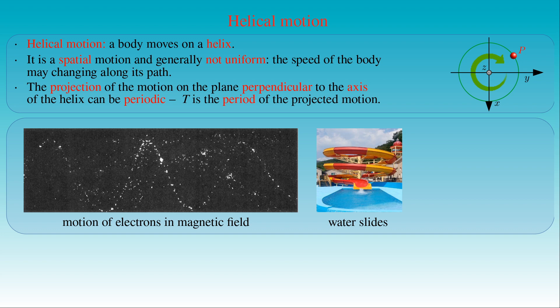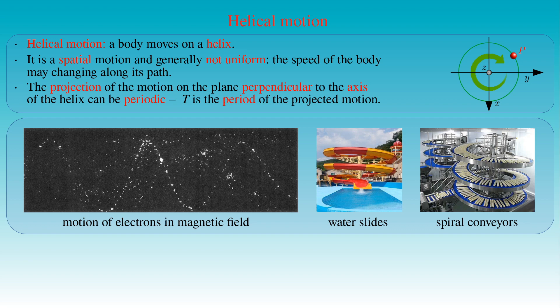We can also find examples for helical motion in industrial technologies. Spiral conveyors transfer loads from one level to another. They are made of modular belt twisted around a drum in the center. The belt slides on rails with low friction, which are fixed on external vertical support columns. If the diameter of the drum is constant along the axis of the conveyor, then the speed of the transferred load is constant as well. Such conveyors provide a quick and effective transfer of products without interrupting the conveying process.